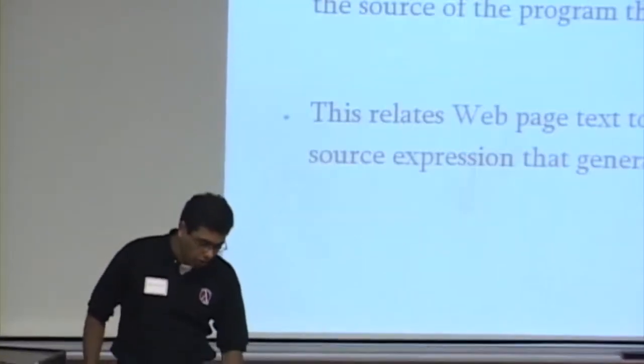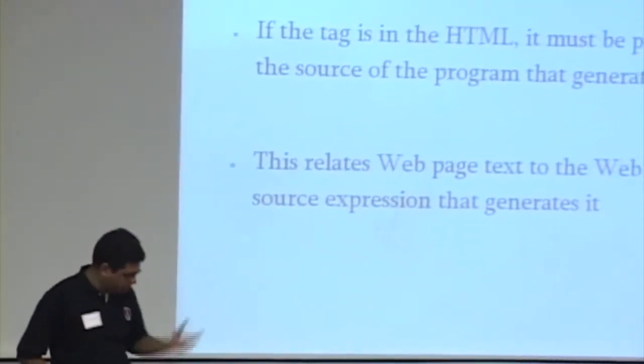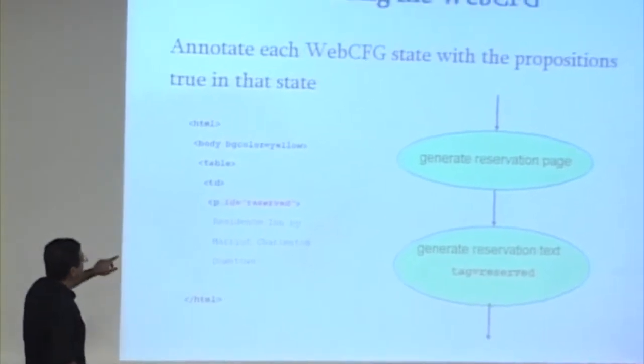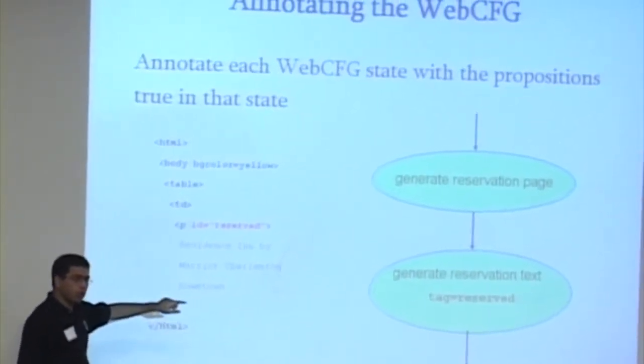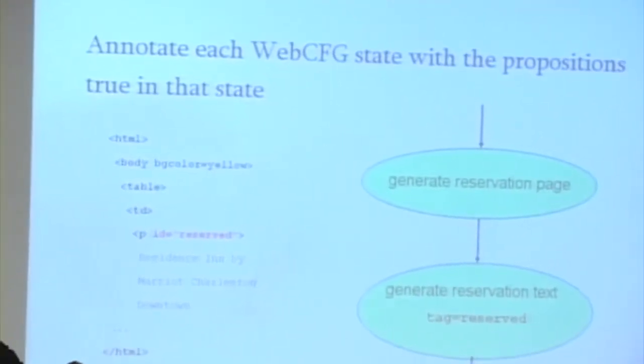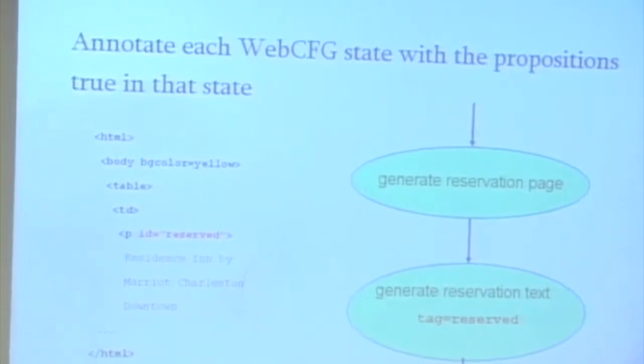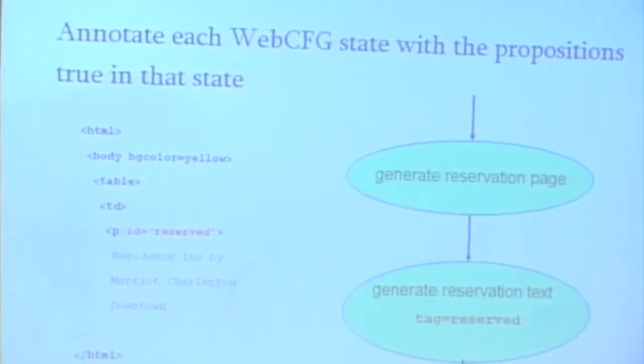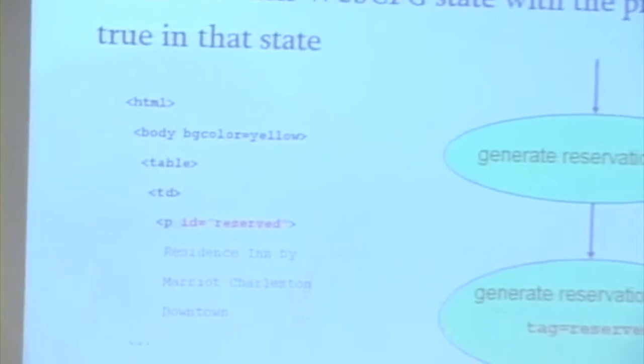What we're going to do is annotate each state in the control flow graph with the tags that were put on that state. This is how we can start thinking about the program, the control flow graph, as generating a trace of these tags.